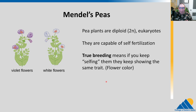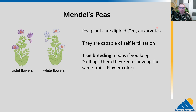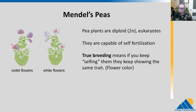Back to Mendel and his model system, the pea plant. Pea plants are diploids — they are 2N, so they have two copies of each chromosome inside each cell. They are eukaryotes. They are capable of self-fertilization — that's super critical — and that means we can create true breeding lines. True breeding means that if you keep selfing — crossing the plant with itself — their offspring will keep showing the same trait. If you have a purple-flowered plant and you self it and all offspring are purple, and you self that and all offspring are purple, that's a true breeding line. You could have the same thing for white flowers.